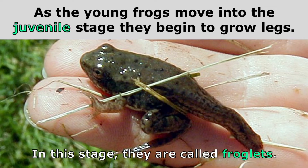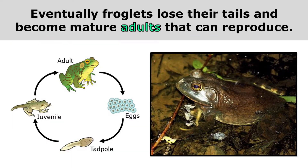As the young frogs move into the juvenile stage, they begin to grow legs. In this stage, they're called froglets. Eventually, froglets lose their tails and become mature adults that can reproduce.